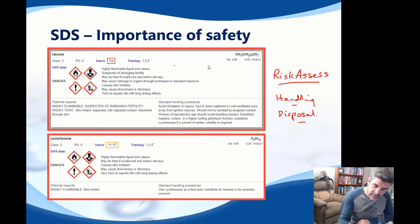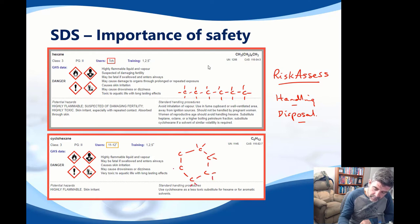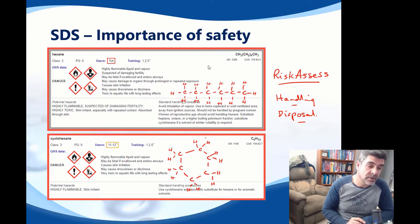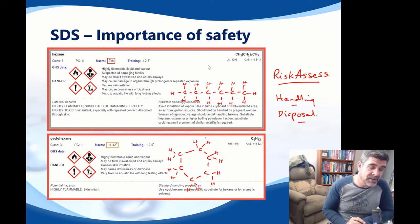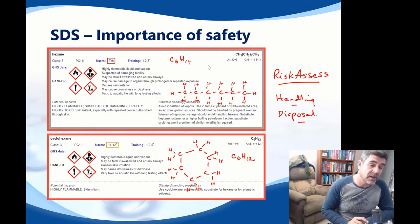If we briefly draw these, hexane would be a six-carbon chain with hydrogens at each point. Cyclohexane, on the other hand, would look like a ring with all the hydrogens filled in. Both of these compounds are alkanes — they both have only single bonds connecting their carbons and both have six carbons. Hexane is C6H14 and cyclohexane is C6H12.